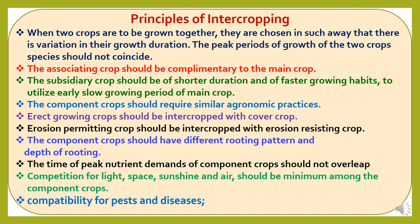Now, the principles of intercropping: First, when two crops are to be grown together, they are chosen such that there is variation in their growth duration — the peak periods of growth of the two crop species should not coincide. Second, the associated crop should be complementary to the main crop. Third, the subsidiary crop should be of shorter duration and faster growing habits to utilize early slow-growing periods of the main crop. Fourth, the component crops should require similar agronomic practices.